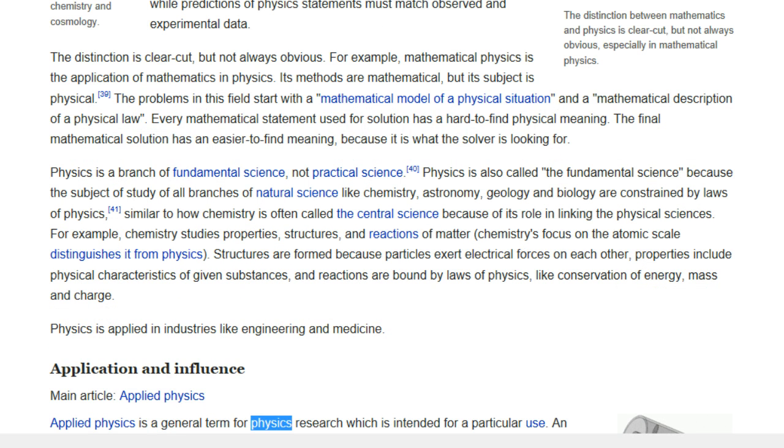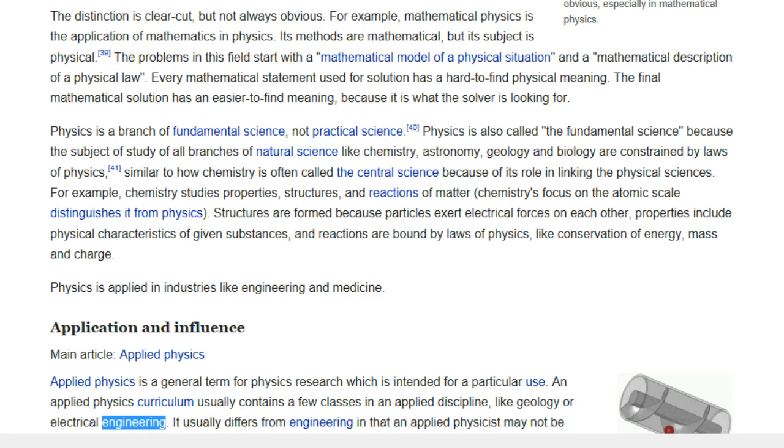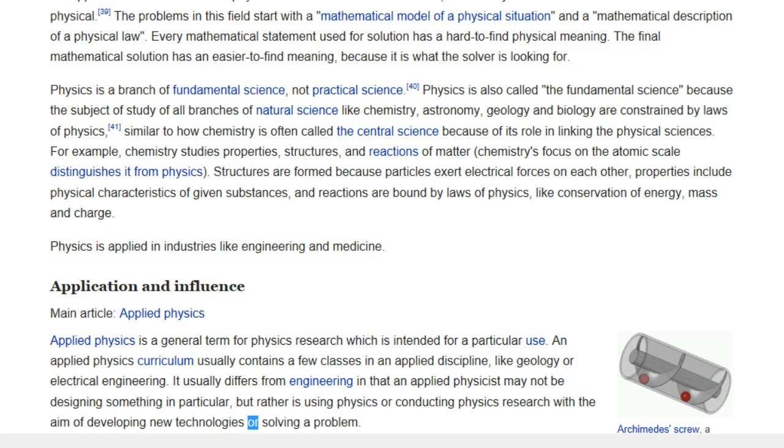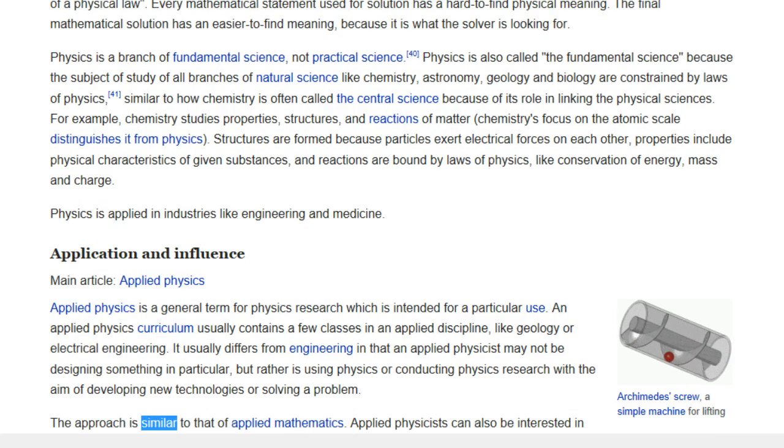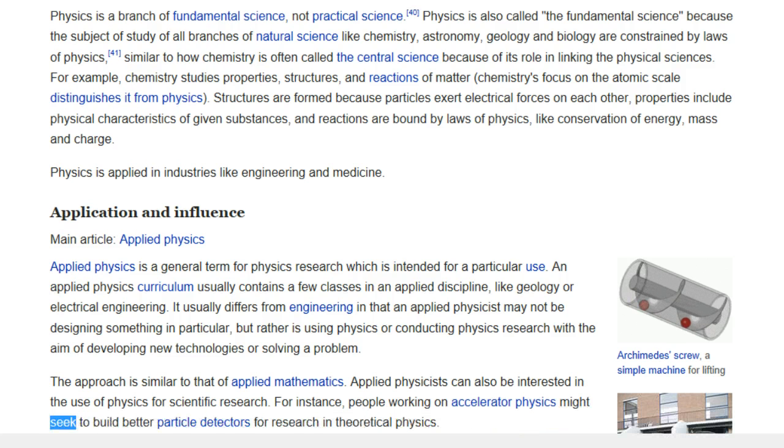Applied physics is a general term for physics research which is intended for a particular use. An applied physics curriculum usually contains a few classes in an applied discipline, like geology or electrical engineering. It usually differs from engineering in that an applied physicist may not be designing something in particular, but rather is using physics or conducting physics research with the aim of developing new technologies or solving a problem. The approach is similar to that of applied mathematics. Applied physicists can also be interested in the use of physics for scientific research. For instance, people working on accelerator physics might seek to build better particle detectors for research in theoretical physics.